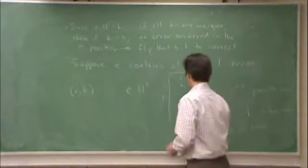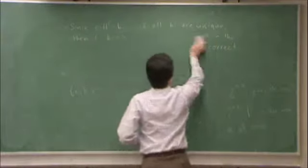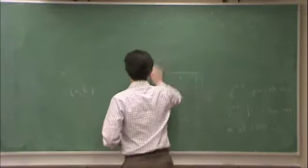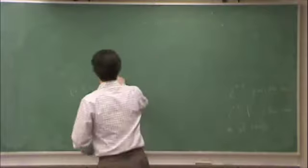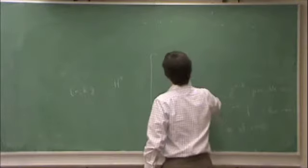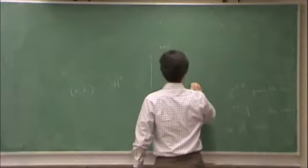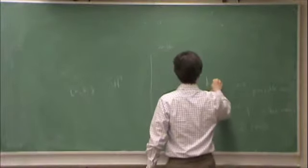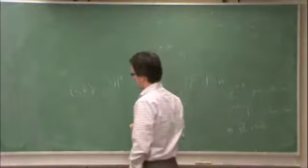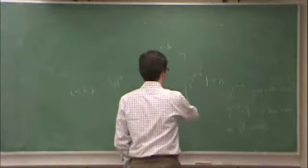So in other words, I need H transpose has n-k columns and 2 to the n-k minus 1 which is equal to n rows. So if we solve for that, we find that, we can do this by substitution, we find that basically n...